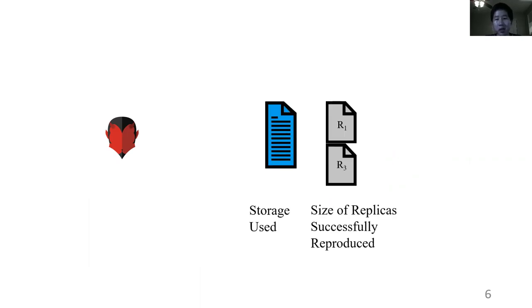So to judge the success of an adversary in this game, we compare the size of the state file it produced with the size of the replicas it was able to successfully reproduce. We say a scheme is s-sound, if for all polynomial time adversaries, the ratio of this storage used with the replicas it was able to reproduce is almost always larger than s. And ideally, we want this s factor to be as close to one as possible.